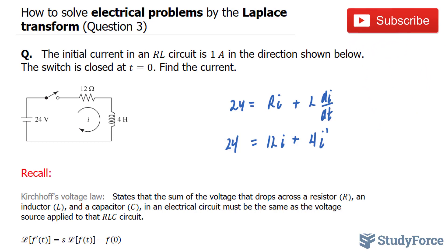Also, before we move on to the next step, the factor 4 is common amongst all three terms. If I divide this by 4, I end up with 6. If I divide this by 4, I end up with 3. And this becomes simply I prime. So I'm working with 6 is equal to 3i plus I prime.